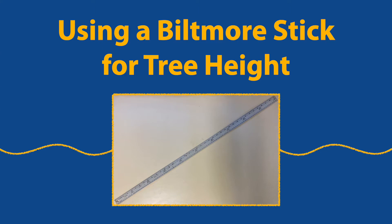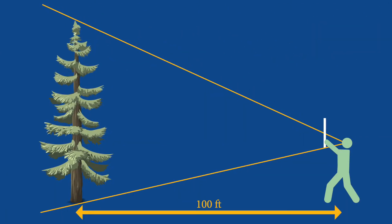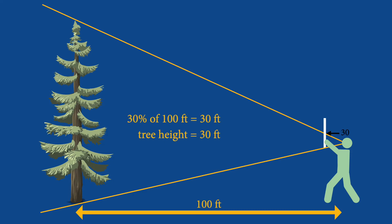The Biltmore or tree stick can also be used for measuring height. Standing 100 feet from the tree, hold the stick out 25 inches from your eye oriented vertically. Line up the bottom or zero with the base of the tree and, without moving your head, sight up the stick to the top of the tree. Read the height from the scale where your line of sight and the top of the tree intersect. For the 100-foot distance, tree height is read directly — for example, 30 on the scale means 30 feet.